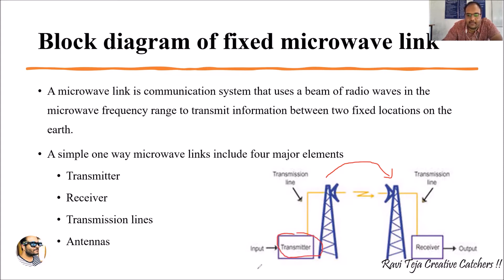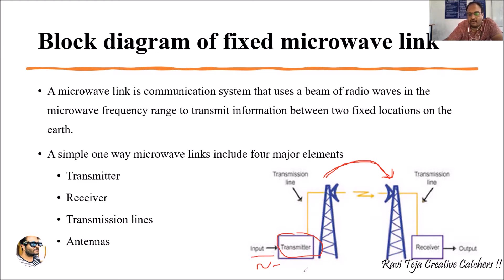Modulating the signal means we are adding the data — whatever data or information we want to send — to the signal generated by the transmitter. So the transmitter generates the required microwave signal and combines the input data with it. Using a transmission line, this modulated signal is then sent to the transmitting antenna, which transmits it into free space.